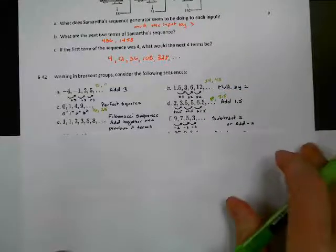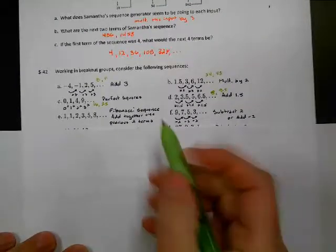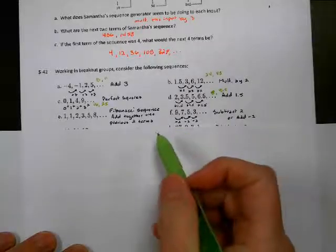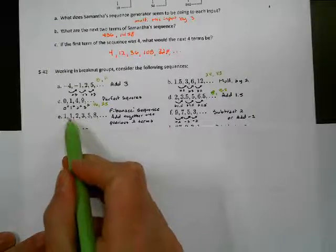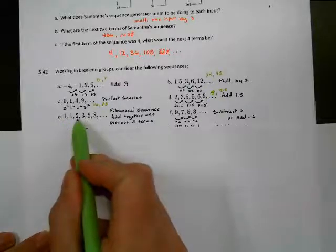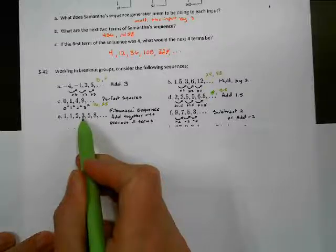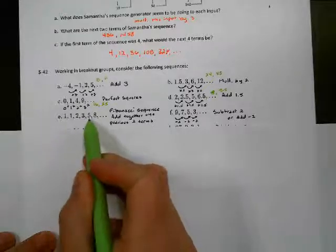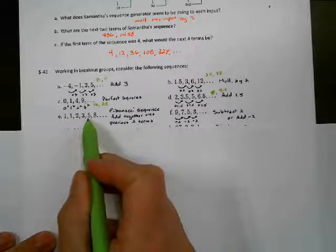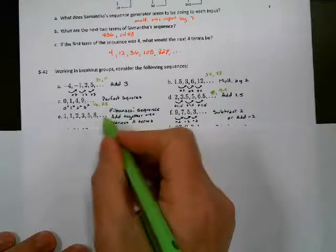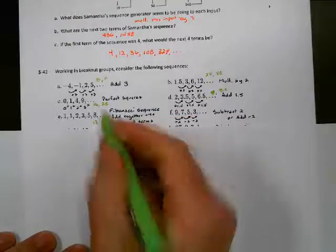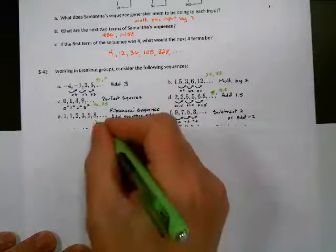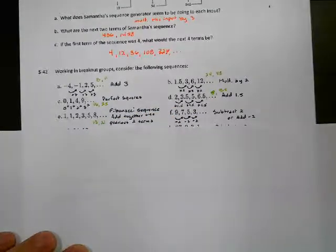Over here is the Fibonacci sequence — well, part of it. In the Fibonacci sequence, we add together the previous two terms. There were no previous terms at the start, so we begin with 1. The previous two terms are 1 and nothing, so that's why this is 1. Then 1 plus 1 is 2, then 1 plus 2 is 3, then 2 plus 3 is 5, then 3 plus 5 is 8. To continue: 8 plus 5 is 13, so our next one would be 13, and then 13 plus 8 gives us 21. We're just adding the previous two numbers together — another tricky one.